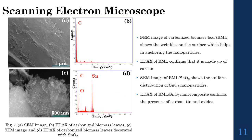We also carried out scanning electron microscopy (SEM) for both carbonized biomass leaves and BML-SnO2 nanocomposites. The SEM image of BML shows wrinkles, which help in anchoring the SnO2 nanoparticles, and the EDX spectrum shows the carbon peak. In the BML-SnO2 nanocomposites, the SEM image shows uniform dispersion of SnO2 nanoparticles on the BML layer, and EDAX confirms the presence of Sn and oxygen.